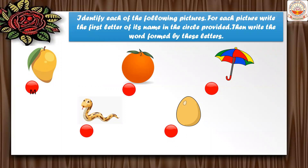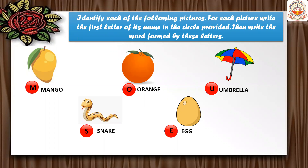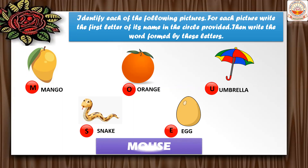The first picture is a mango — M for mango. The second picture is an orange — O for orange. The next colorful picture is an umbrella — U for umbrella. Then snake — S for snake. And the last picture is an egg — E for egg. Now form a word using the letters in the red circle.